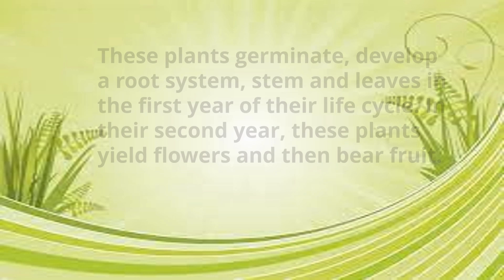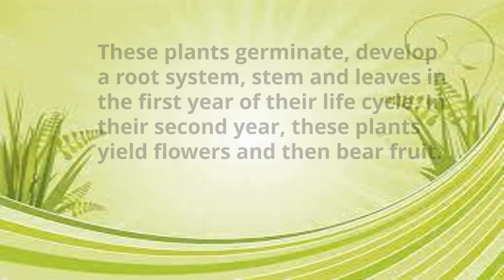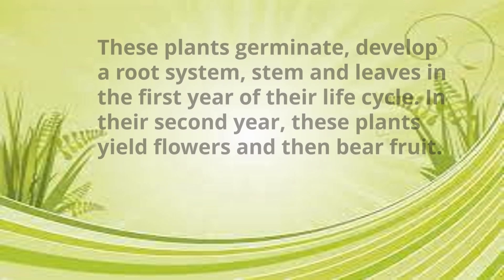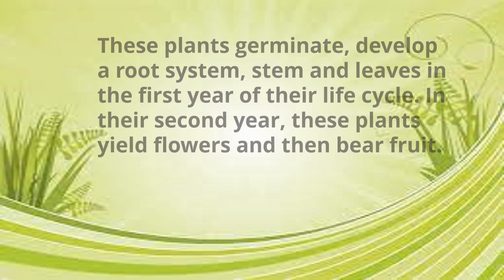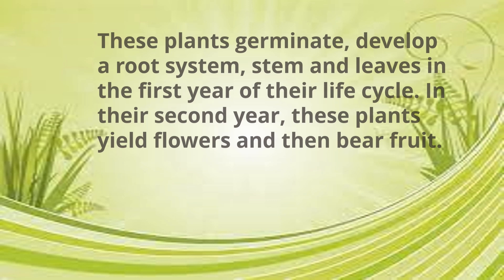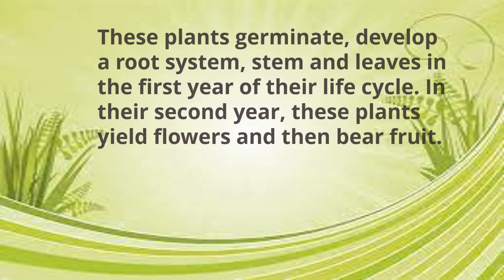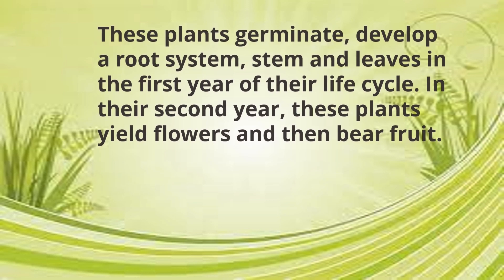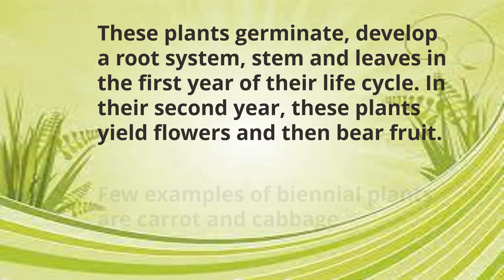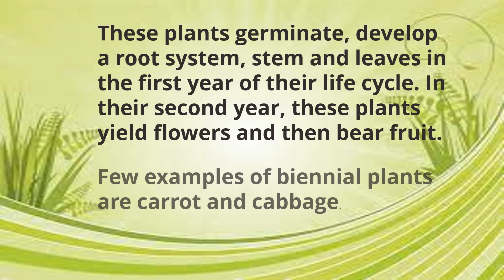These plants germinate, develop a root system, stem, and leaves in the first year of their life cycle. In their second year, these plants yield flowers and then bear fruit. Few examples of biennial plants are carrot and cabbage.